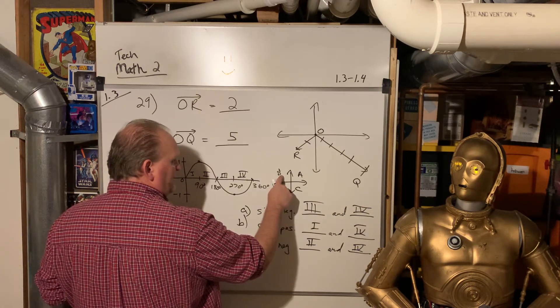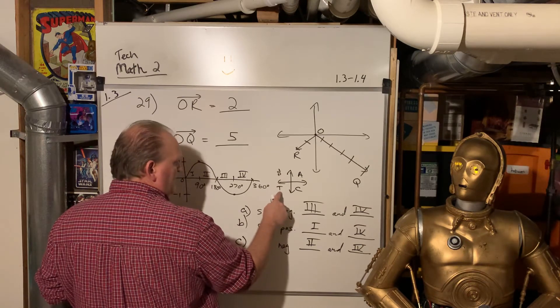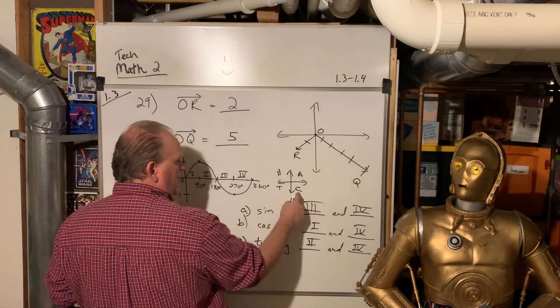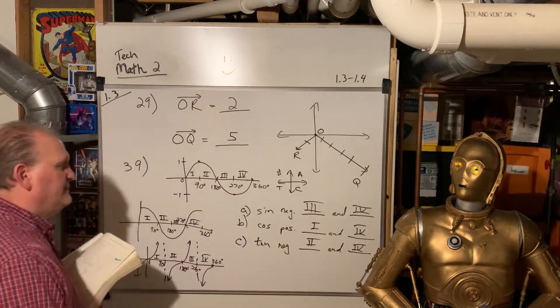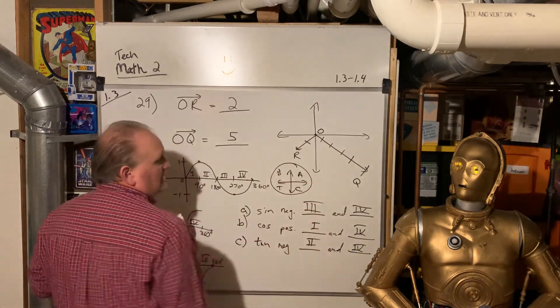Sine is only positive in the second. Cosine and tangent are negative. Tangent is positive in the third. Sine and cosine are negative. Cosine is positive in the fourth. Sine and tangent are both negative. And so you could use this to figure these out.